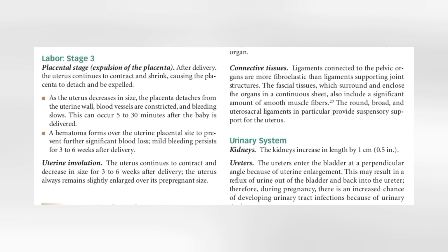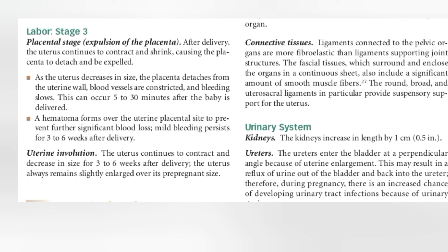A hematoma forms over the uterine placental site to prevent further significant blood loss. Mild bleeding persists from 3 to 6 weeks after delivery. Uterine involution then occurs — the uterus continues to contract and decrease in size over 3 to 6 weeks after delivery. The uterus always remains slightly enlarged compared to its pre-pregnant size.